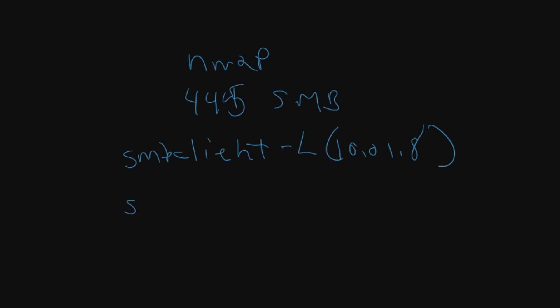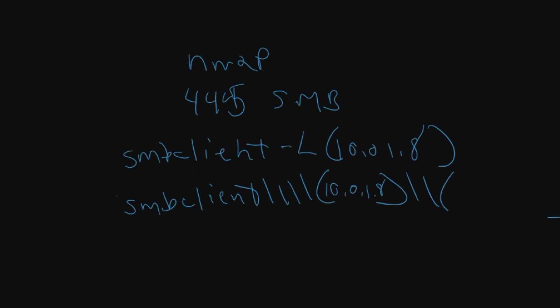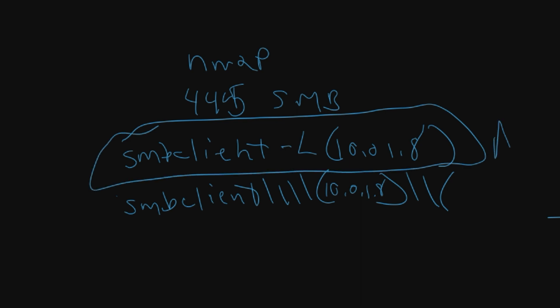Now if you're connected to that SMB client and you want to connect to its shares — the files you'll be able to gain access to — you're going to do smbclient again, then four backslashes, then the target IP such as 10.0.1.8, then the name of that share. You're going to see the name of the share when you run the previous command — it'll pop up and say, for example, Amy. You simply put that share name in and SMB client will do its magic and you'll have access to those files.